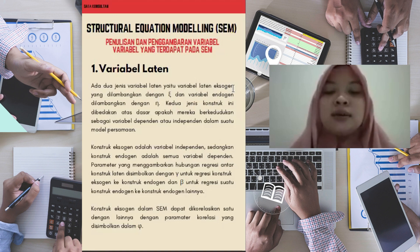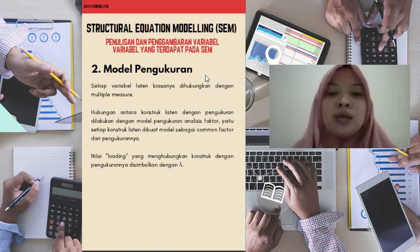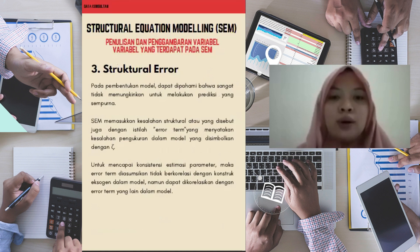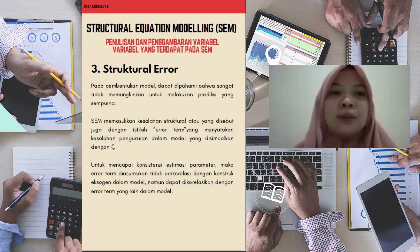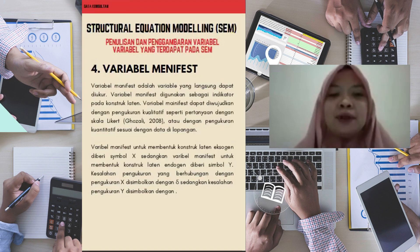Variabel eksogen atau independen biasa disimbolkan dengan huruf X. Di model pengukuran juga simbolnya ada simbol lambda. Dan structural error ini disimbolkan dengan zeta. Jadi kita harus memahami banyak simbol di dalam Structural Equation Modeling. Variabel manifest itu biasa disimbolkan dengan huruf X dan huruf Y.